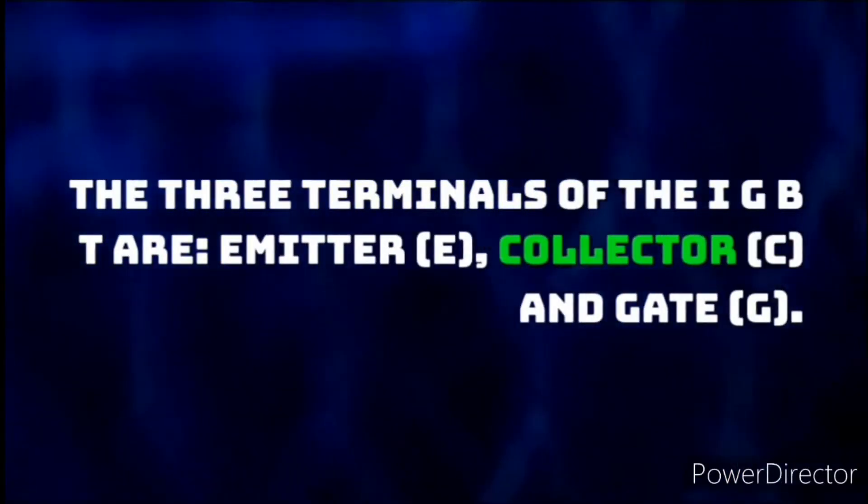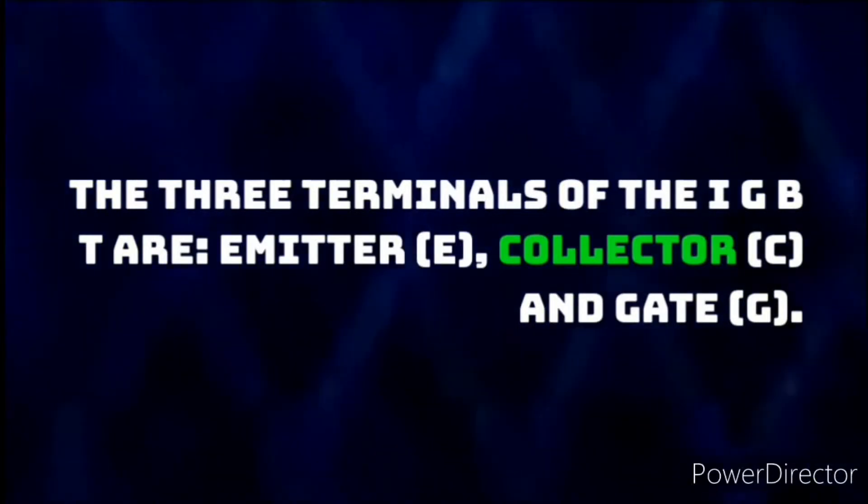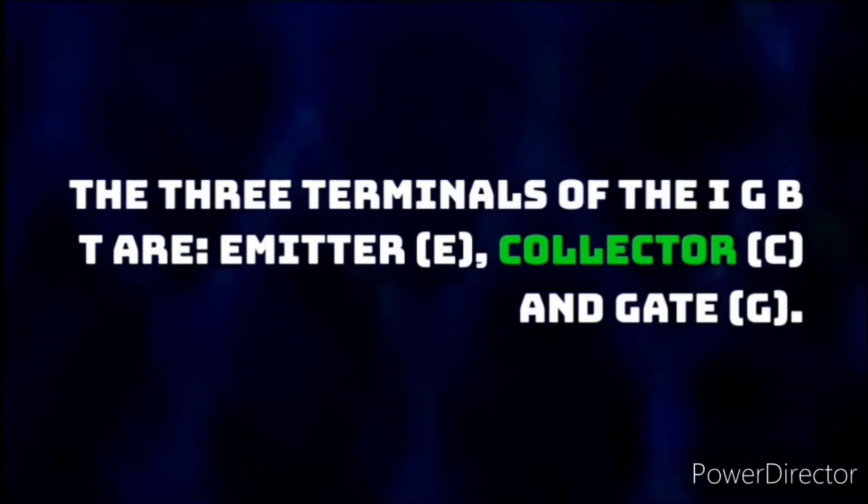The three terminals of the IGBT are Emitter E, Collector C, and Gate G. The control signal is applied to the gate terminal of the IGBT.